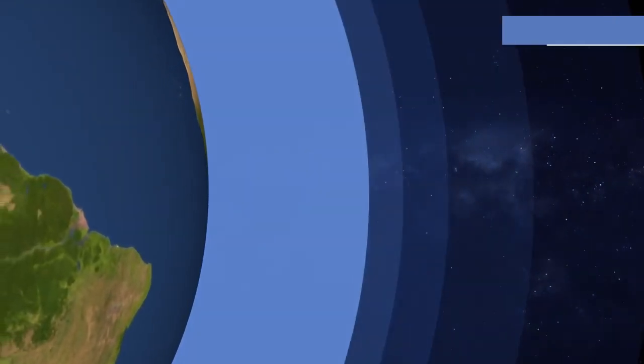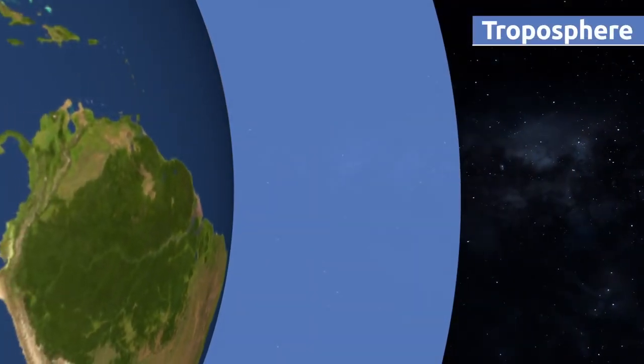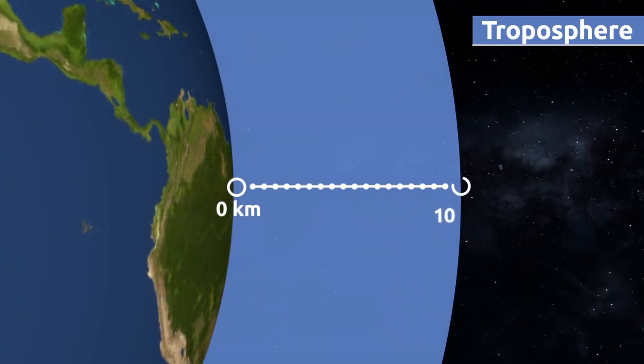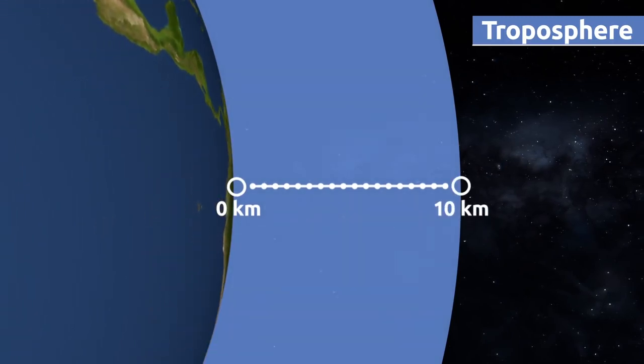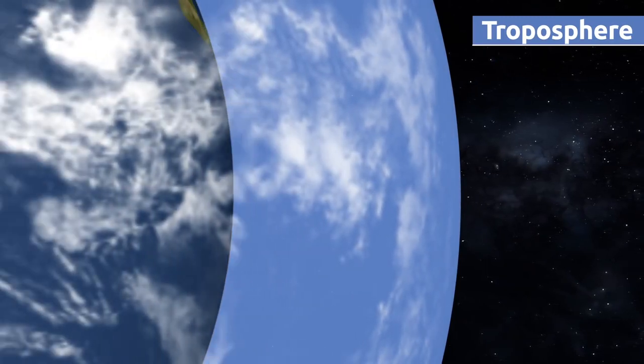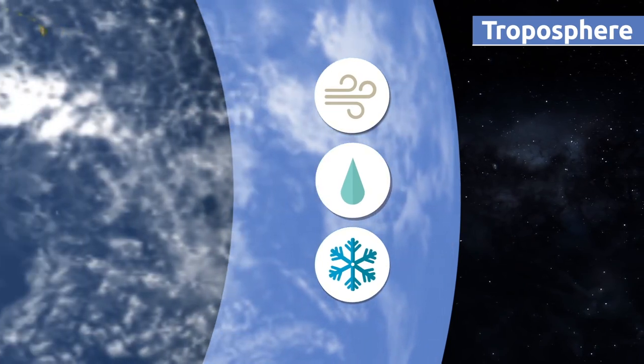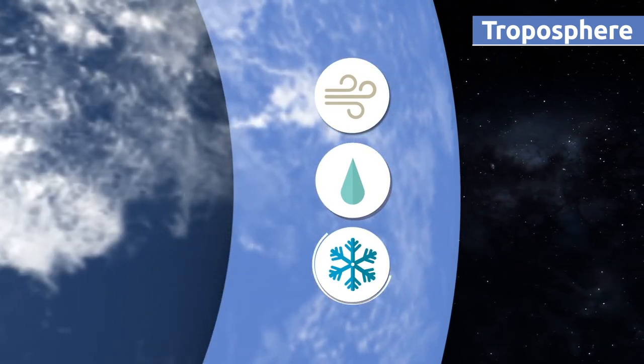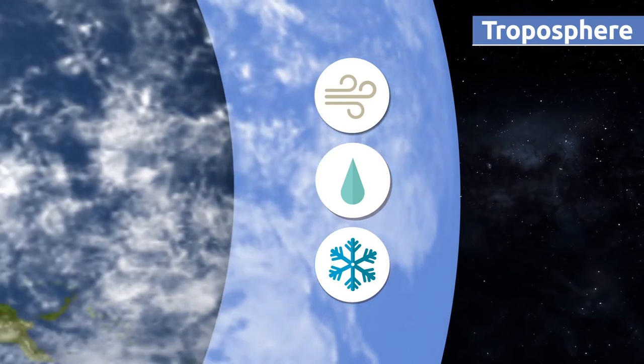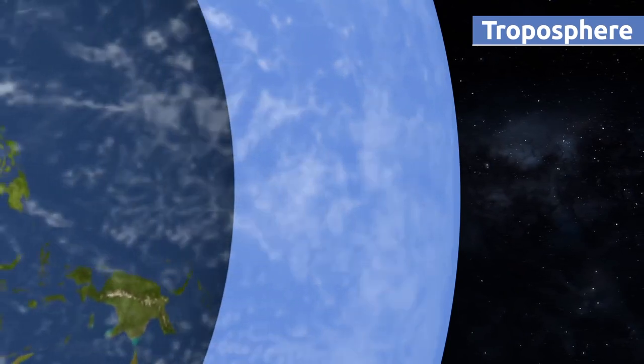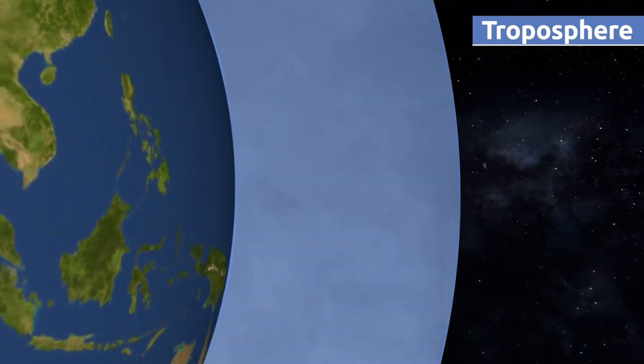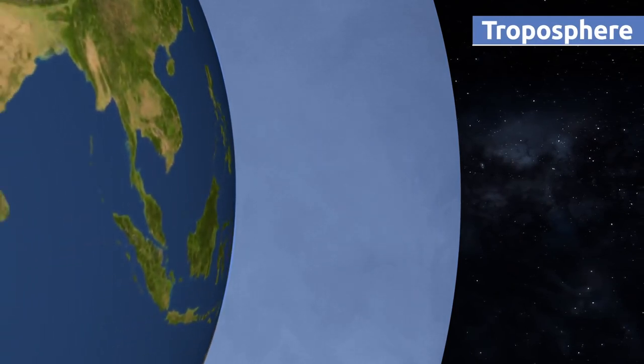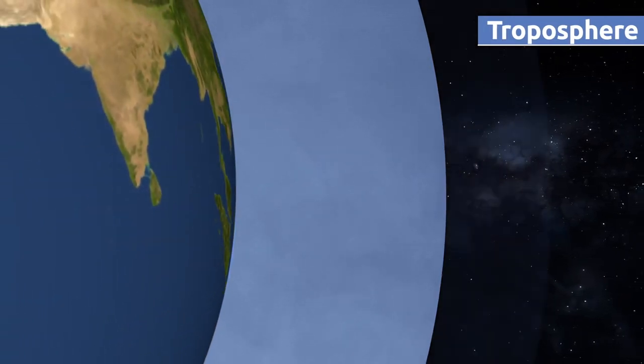The troposphere is the layer closer to the surface of the Earth. It measures approximately 10 kilometers high. Clouds are found in the troposphere, and weather phenomena like wind, rain, or snow occur here as well. Air, that is much needed for life on the planet, is found in the troposphere. That's why we should make sure not to contaminate it.